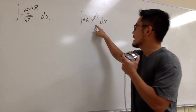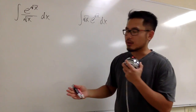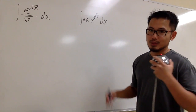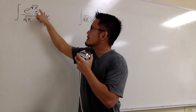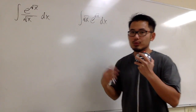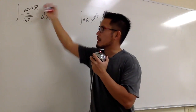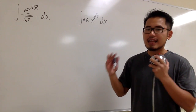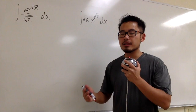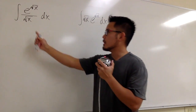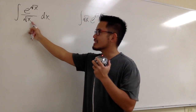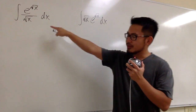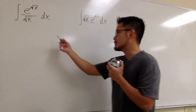Both of these integrals have e to the square root of x. However, for the first one we divide by square root of x, and for the second one we multiply by square root of x. Since we have square root of x in the exponent, we must do some u-substitution. Dividing by 1 over 2 square root of x is the same as multiplying by 2 square root of x. For the first one, that square root of x in the denominator will cancel out, so the first one is actually easier.